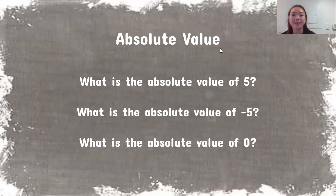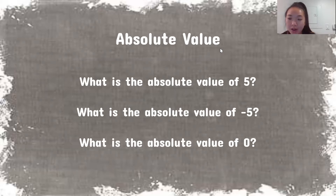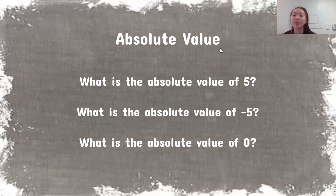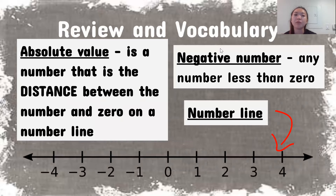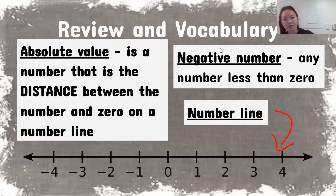I hope that was enough time. What is the absolute value of five? The absolute value of five is going to be five, because the distance from zero to five is five. What is the absolute value of negative five? The absolute value of negative five will be positive five, because the distance from zero to negative five is five.